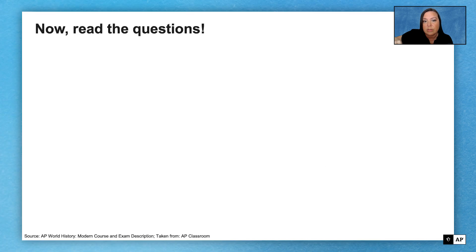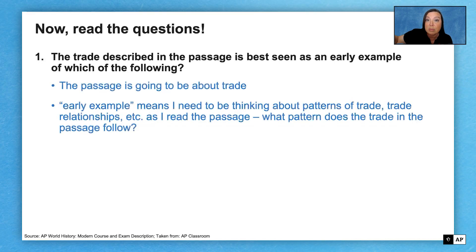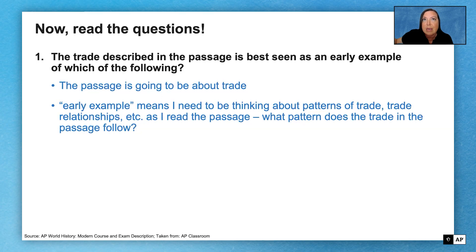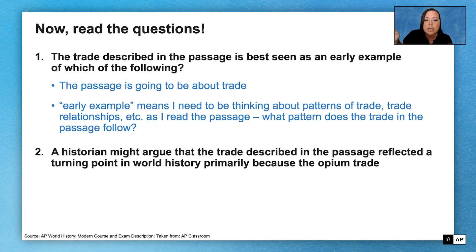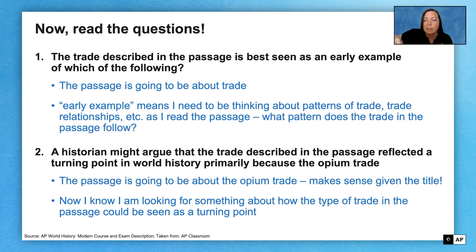The title is called 'Remarks on the Opium Trade.' In my mind I'm already putting pieces together — I know this is the right time period for the opium trade, and that was a major incident between Britain and China. So I'm already getting a sense of what the passage is about before I even read it. The next step is to read the questions, which will help you understand the passage and save you time. The first question asks about what trade described in the passage is best seen as an early example of. So I know I need to be thinking about patterns of trade and trade relationships. The second question is about how a historian could use the trade in the passage as a turning point in history, so I have to think about how this trade might be a turning point in world history.